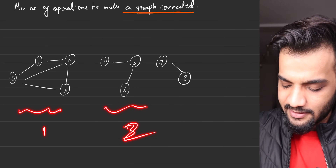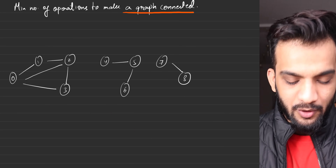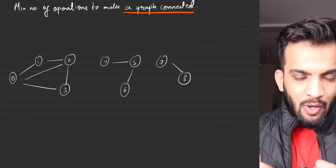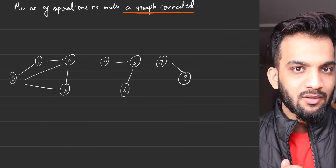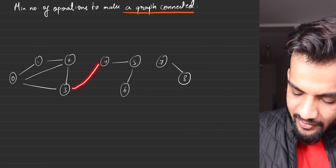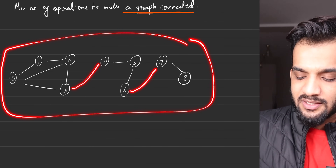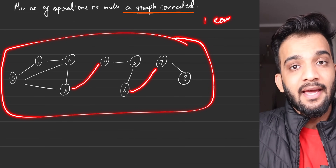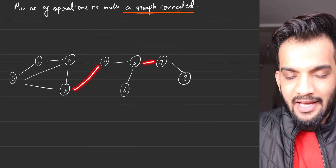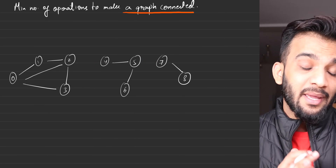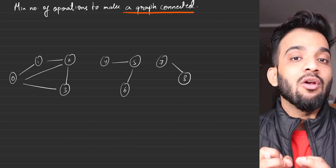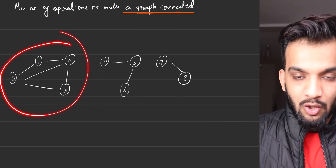Let's understand the question. Imagine your graph currently looks like this and it is in three parts — three different components. What they want is for you to make the entire graph connected. But wait — they have clearly stated you cannot draw imaginary edges. You cannot just draw random edges; you need edges which already exist.